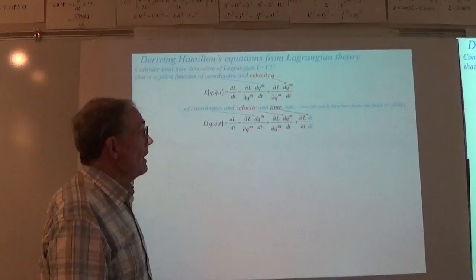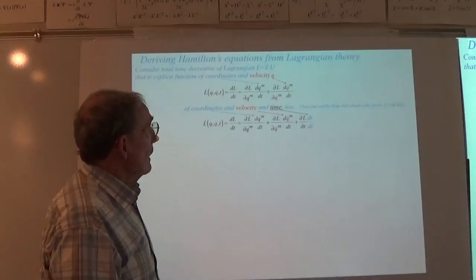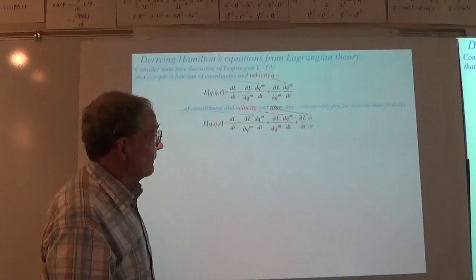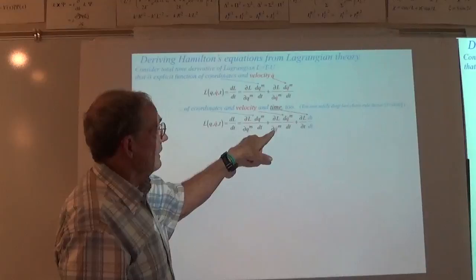If it really is a function of time, you need this extra term here: partial L with respect to T, then times one. Each of these terms is just a chain rule over all of the variables that you have decided this function should have. Here we're working with the total time derivative of the Lagrangian.